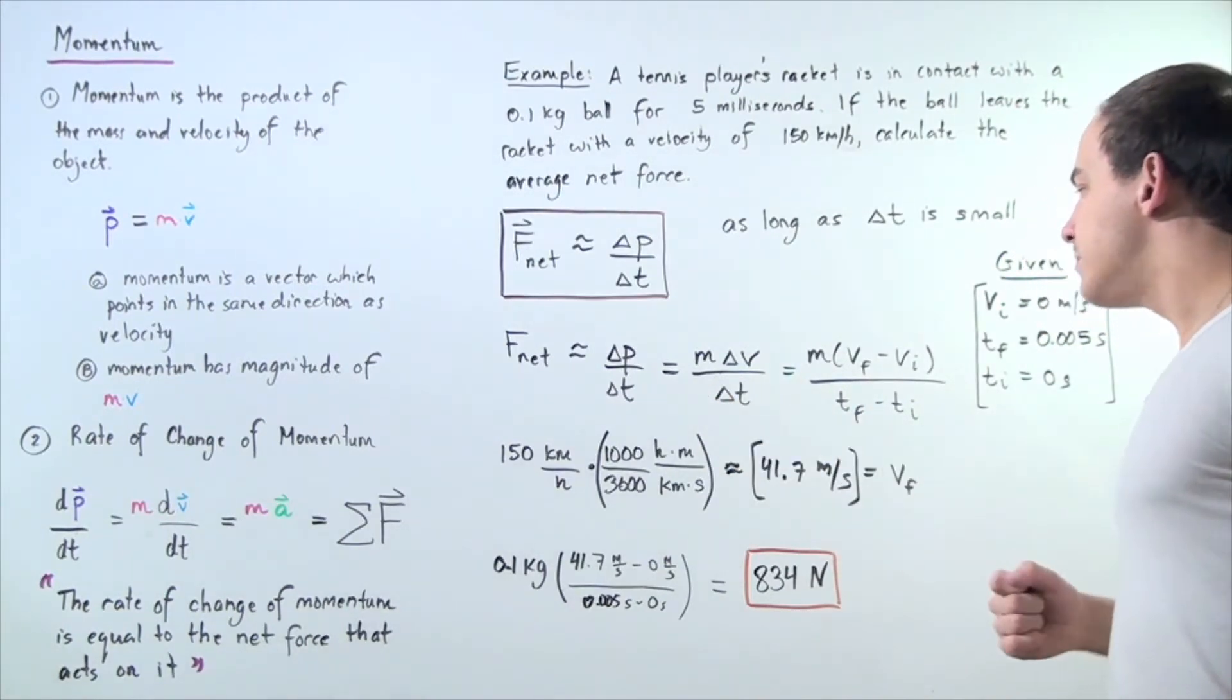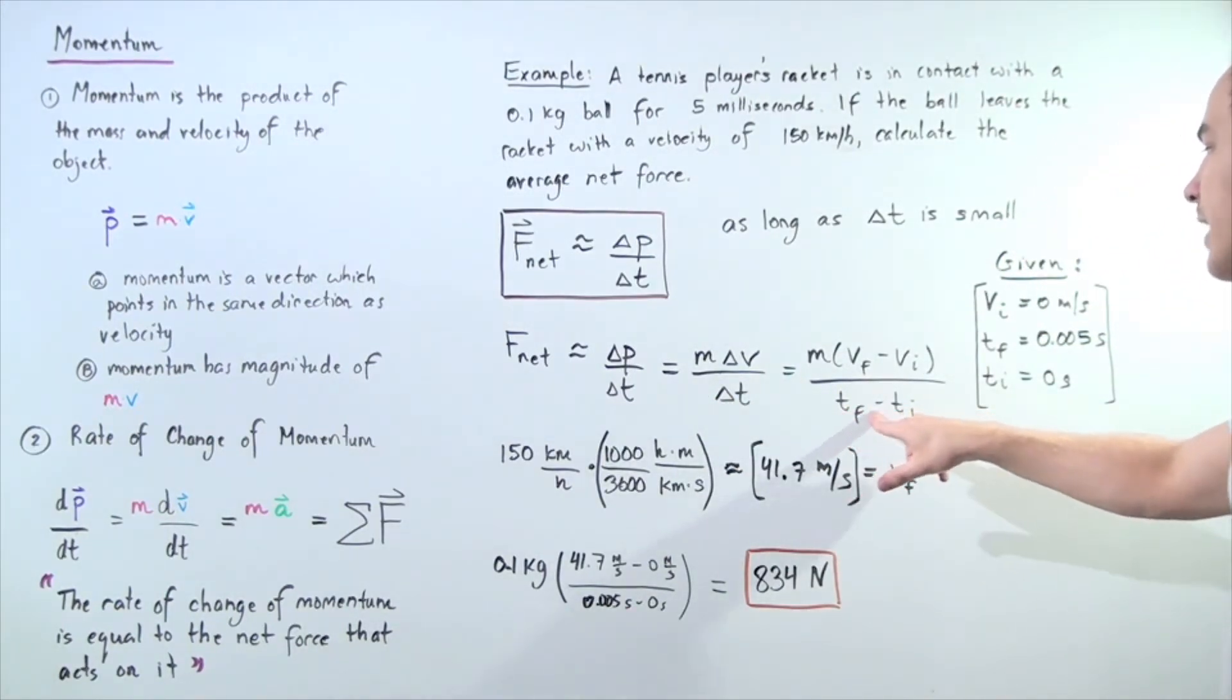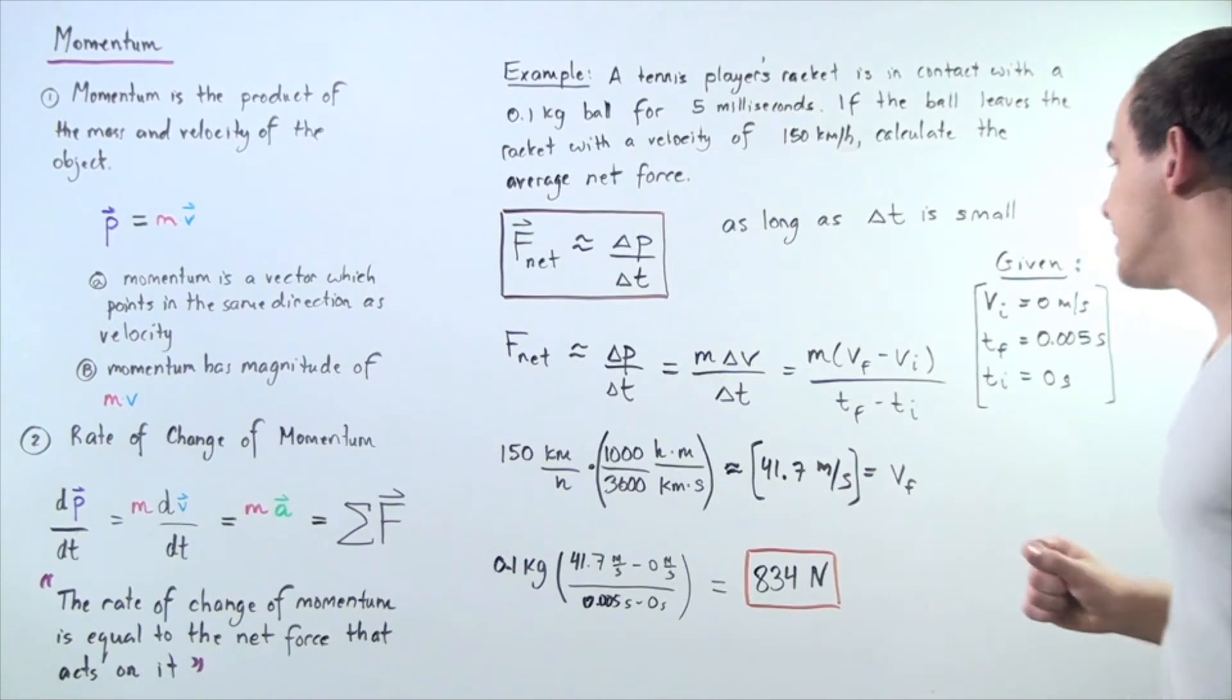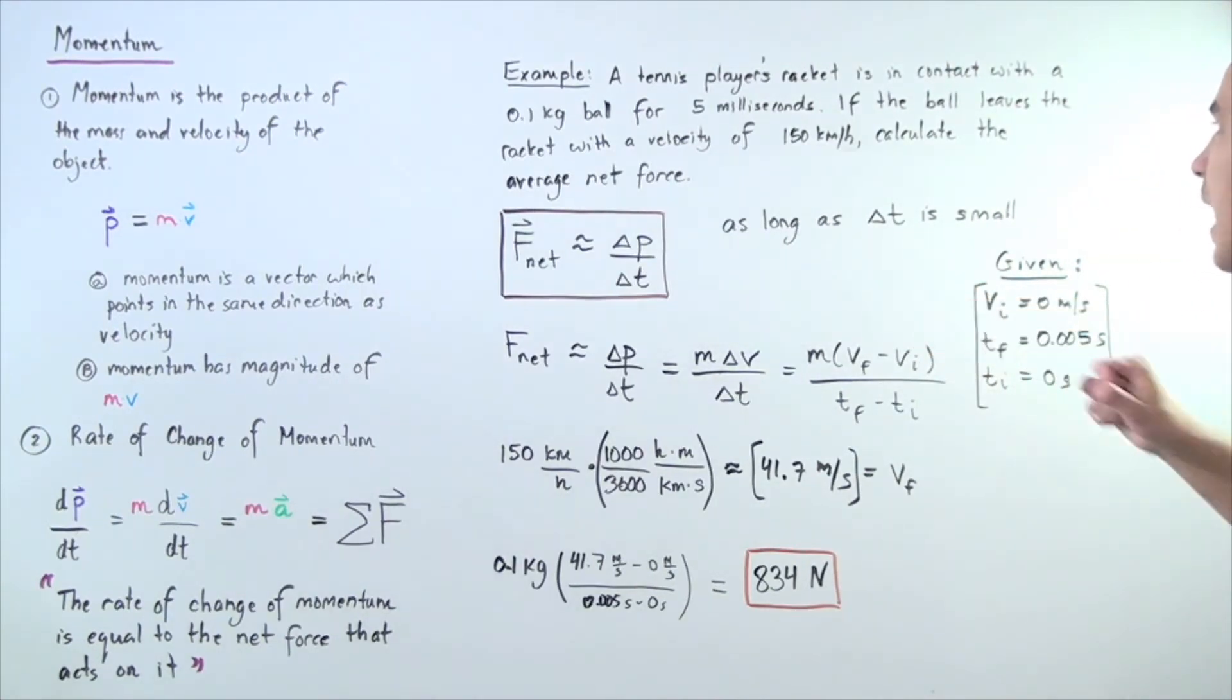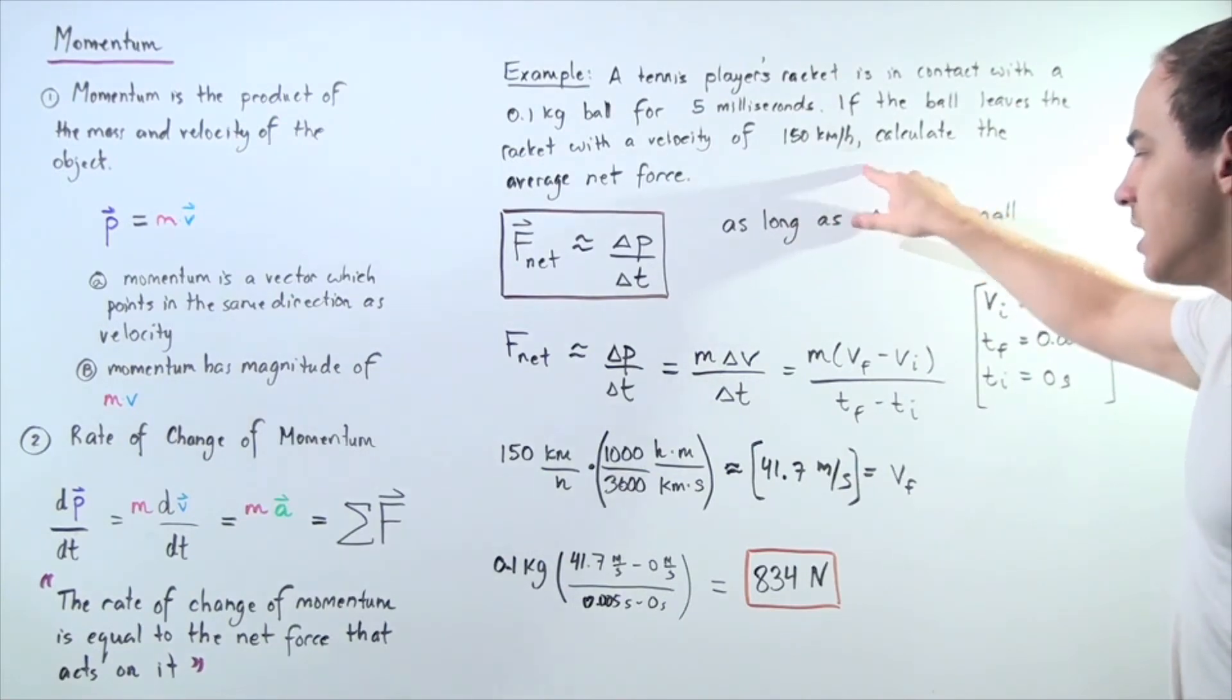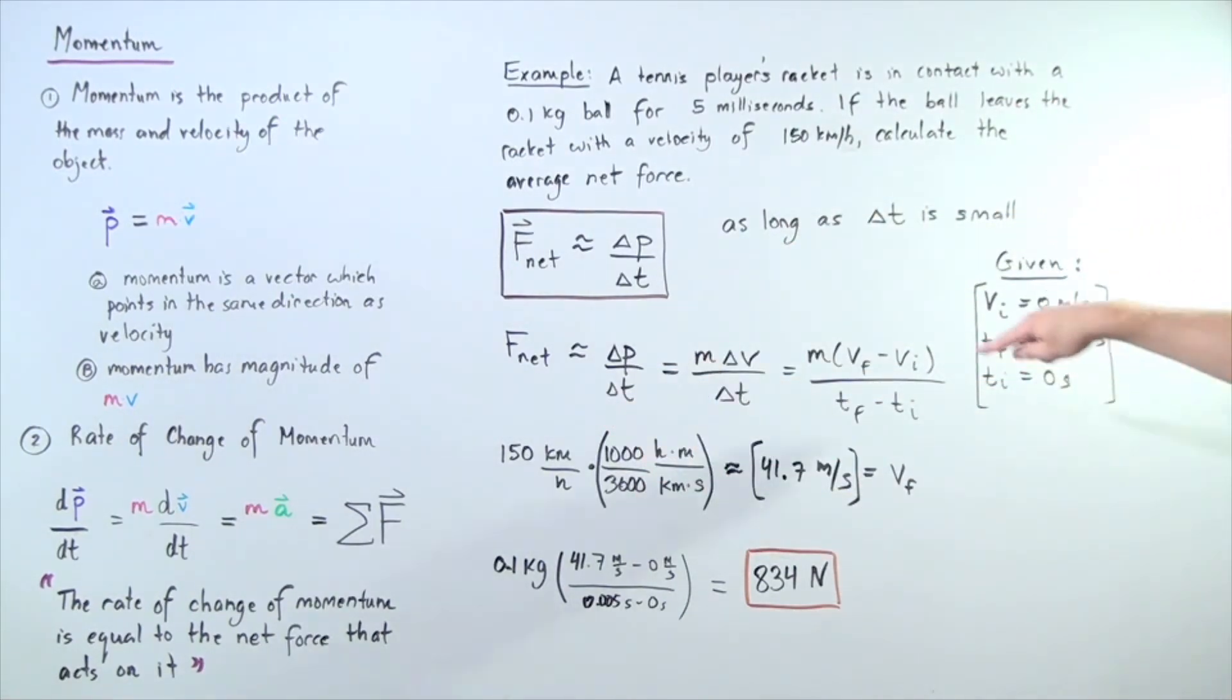The change in time is equal to t final minus t initial, where t initial is 0 seconds and t final is 5 milliseconds or 0.005 seconds. The mass is given to be 0.1 kilograms. Our v final, we have to convert from kilometers an hour to meters per second, which we'll do in just a moment. And the v initial is assumed to be 0 meters per second.